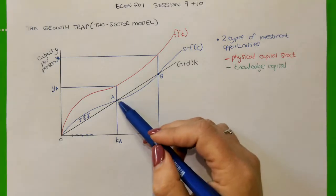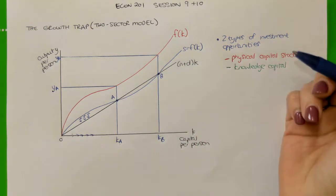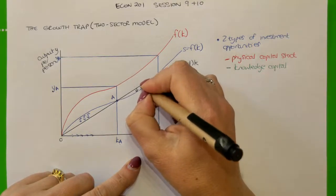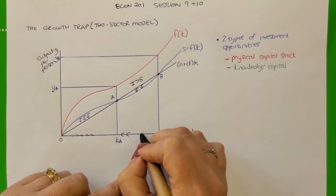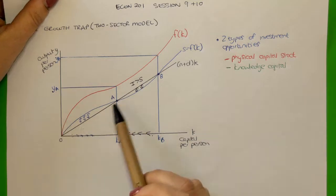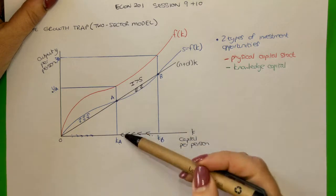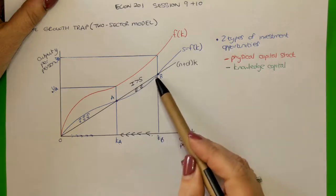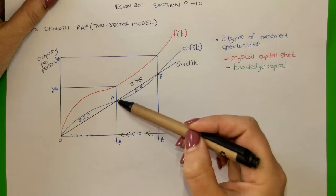It is quite difficult for an economy to move from the steady state equilibrium at A to the one at B or beyond, because between those two steady states, investment required exceeds the amount of savings being generated. An economy investing in physical capital stock, even if it increases its capital-to-labor ratio slightly beyond K-A, cannot sustain that because investment required exceeds savings in that region, and the economy would move back to steady state equilibrium at point A.